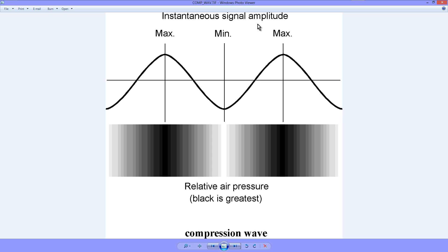If you plot the density or pressure of the air at each instant corresponding with this signal wave, you get something that looks like that. Darkest means there are the most air molecules per unit volume — per cubic millimeter, for example — and lightest indicates the fewest air molecules per unit millimeter.